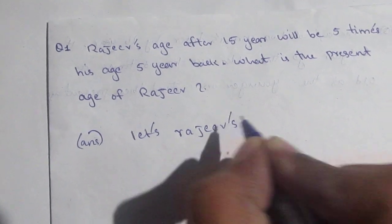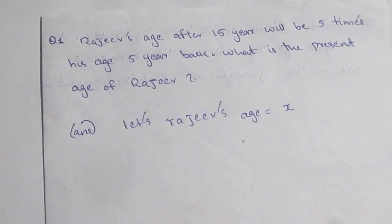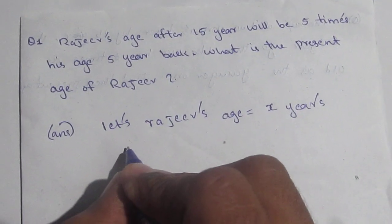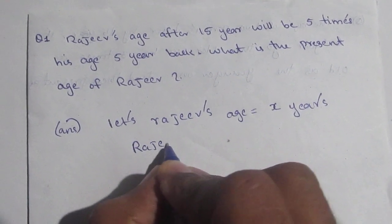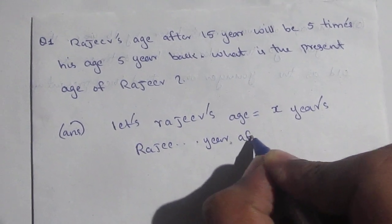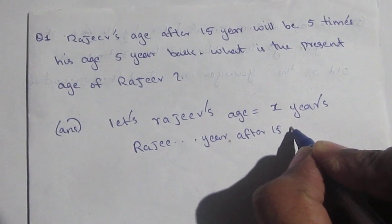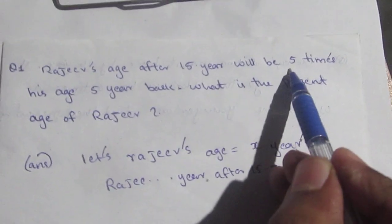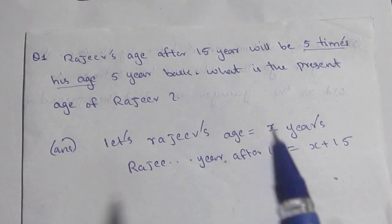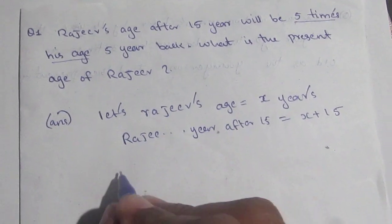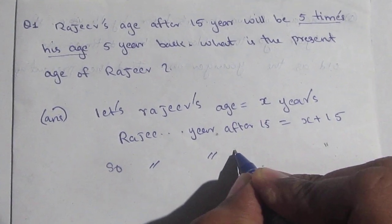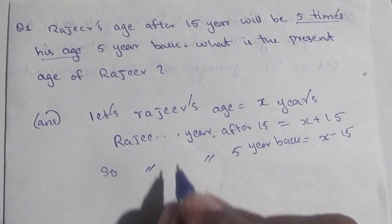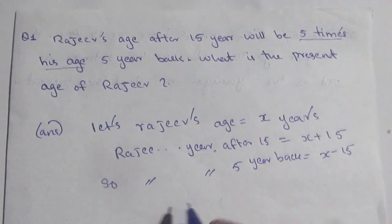Let Rajiv's age be X years. Rajiv's age after 50 — so after 15 years — is X plus 15. The key point is five times his age five years back. So Rajiv's age five years back is equal to X minus 5. We need five times his age five years back.